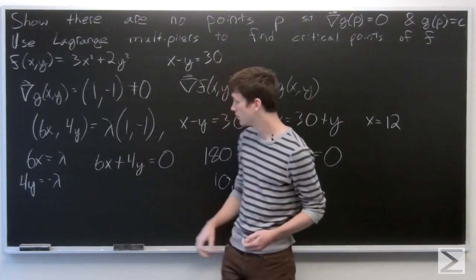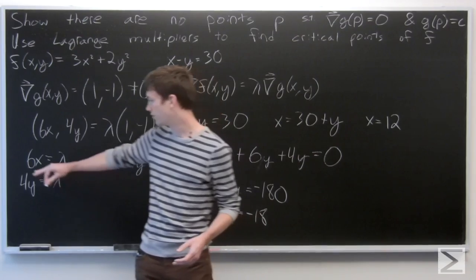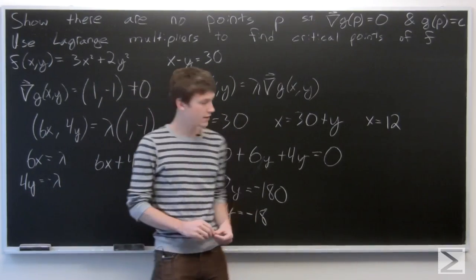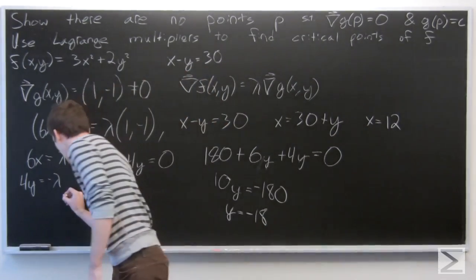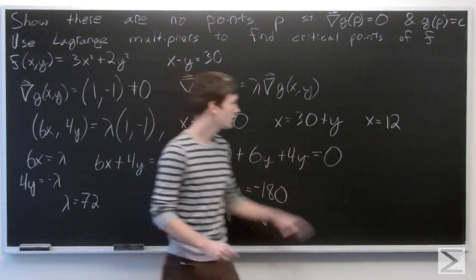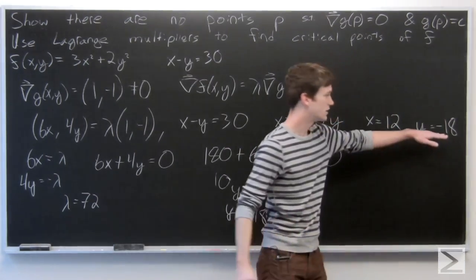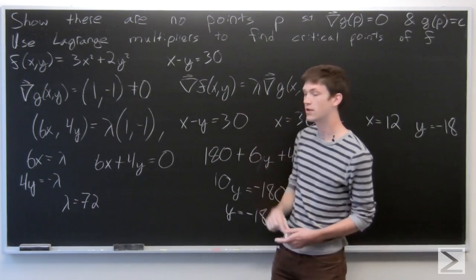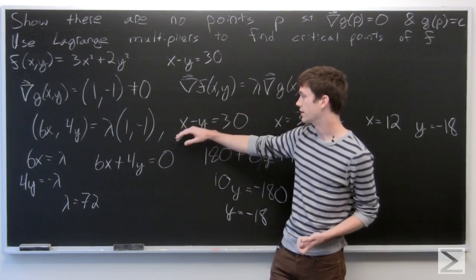We can double-check: plugging in 6 times x gives 6 times 12 = 72, and 4 times y gives 4 times -18 = -72. So we have lambda = 72. We found a point x = 12, y = -18, which satisfies the equation ∇f = λ∇g and also satisfies our constraint equation x - y = 30.